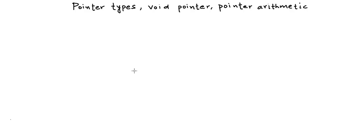The first thing that I want to point out is that pointer variables are strongly typed. What it means is that you need a pointer variable of a particular type to store the address of a particular type of variable. So int* or a pointer to integer will be needed to store the address of an integer, character pointer will be needed to store the address of a character, and similarly if we have a user defined structure or class, then we need a pointer of that particular type only.